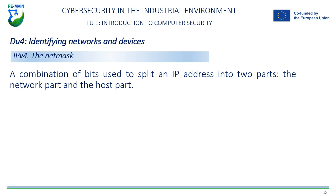The net mask is important because it allows network devices to determine whether an IP address is on the same network or a different network. When a packet is sent across a network, the source device compares the destination's IP address to its own IP address and net mask to determine whether the destination is on the same network or a different network. If the destination is on a different network, the packet is sent to the router to be routed to the destination network.